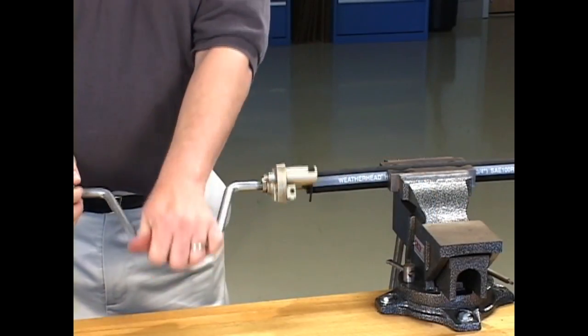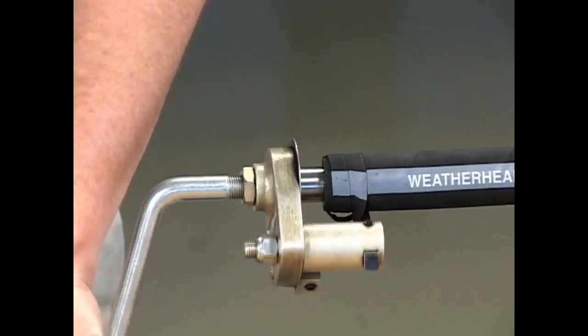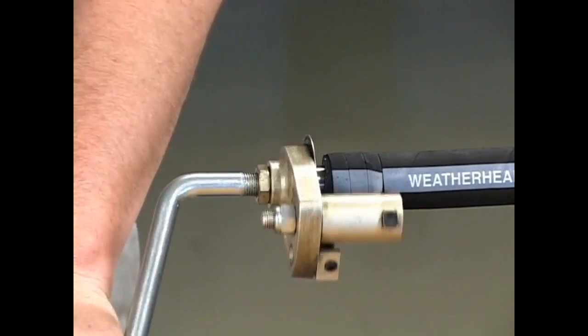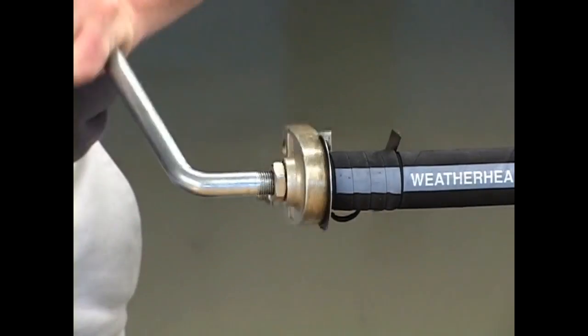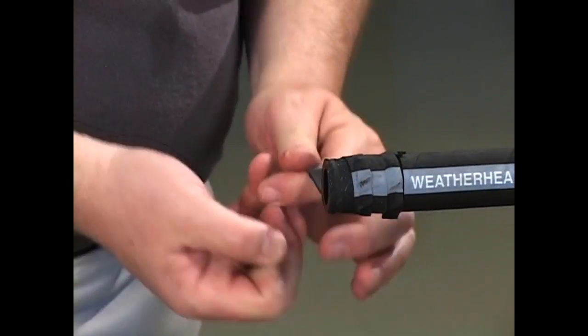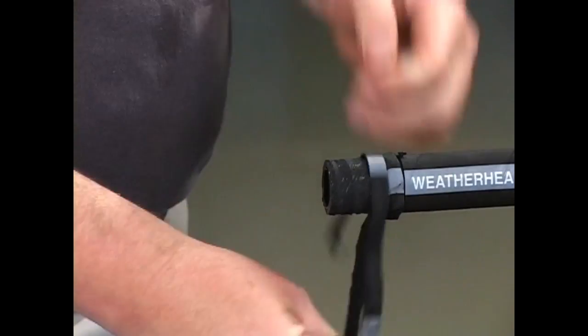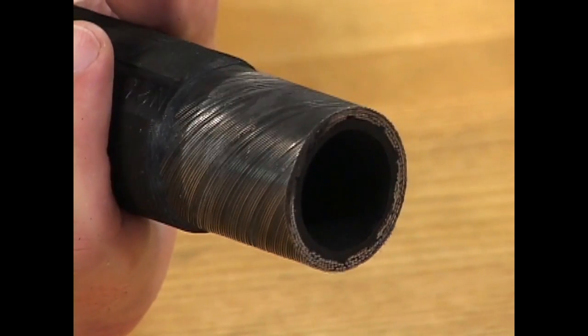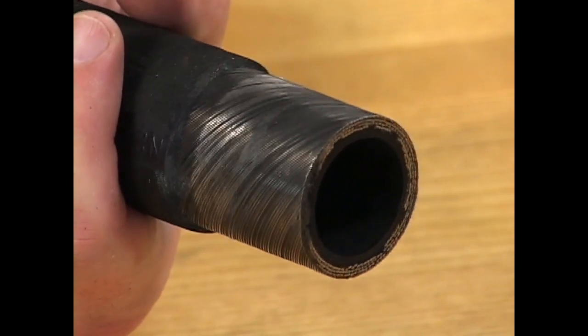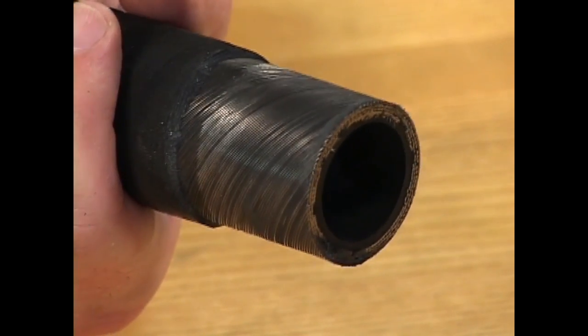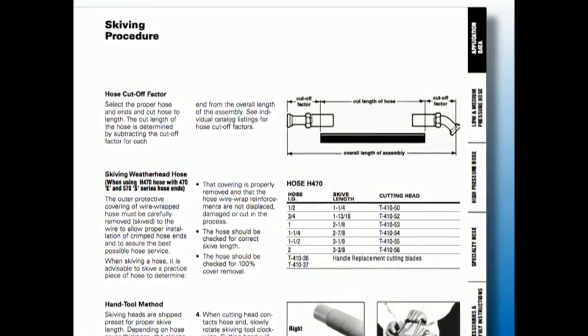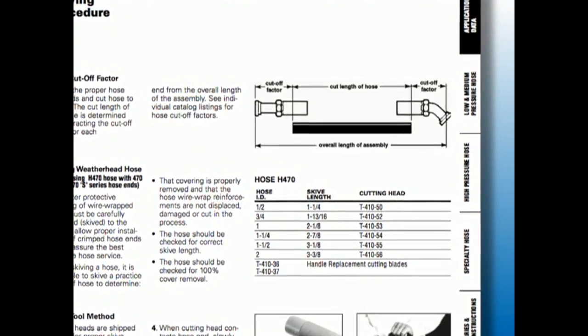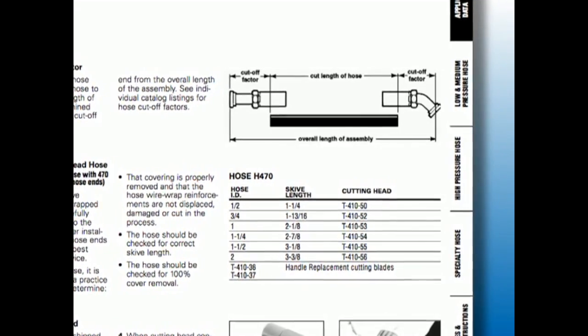Some hose ends require the hose to be skived before assembly. This involves the removal of the outer hose cover at both ends. Instructions for proper skiving are found in the Eaton Weatherhead Master Hose Assembly Catalog. A good skive looks like this, with the cover completely removed, yet the wire wrap is not damaged or disturbed in any way. Refer to the Eaton Weatherhead Crimp Specifications Manual to determine if an Eaton Weatherhead Hose must be skived.